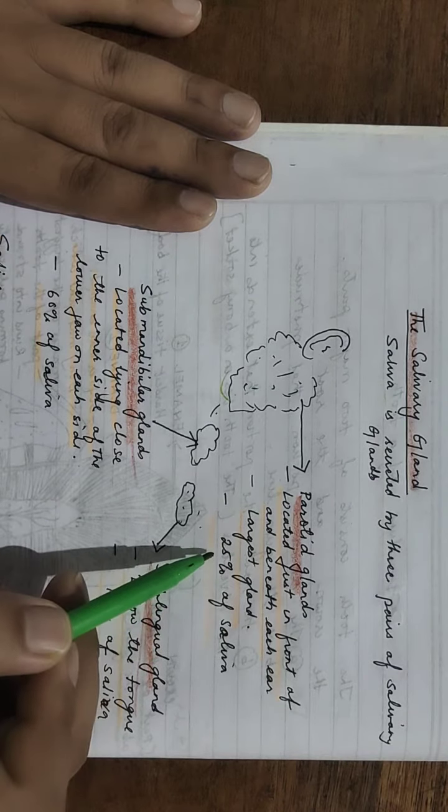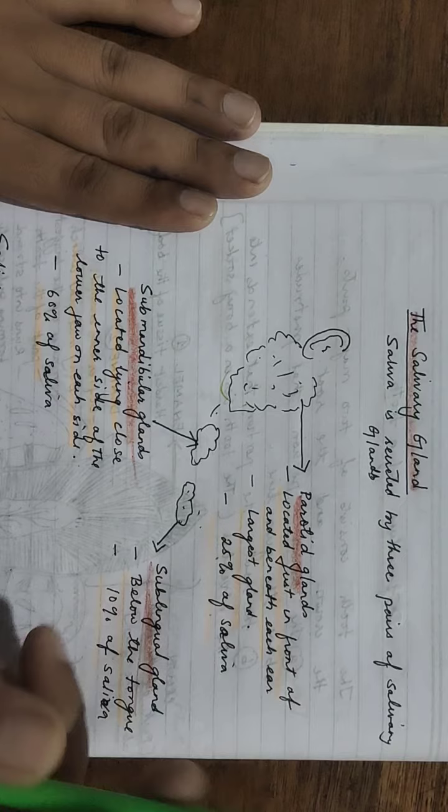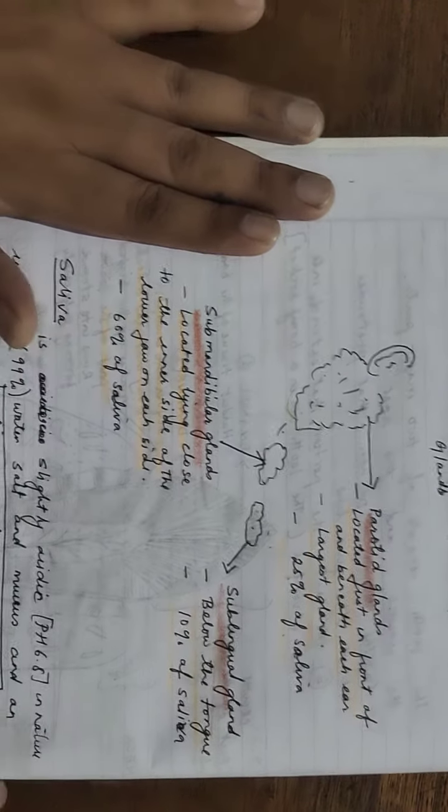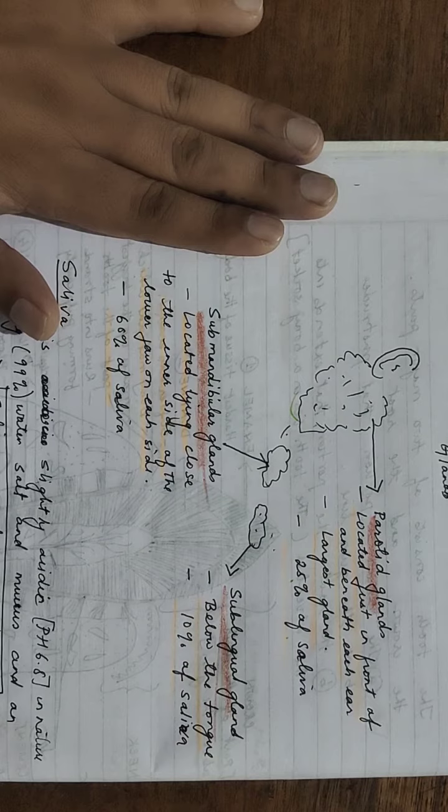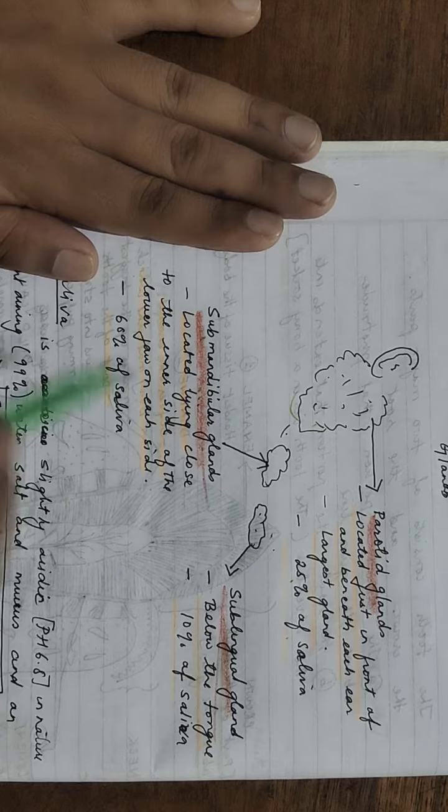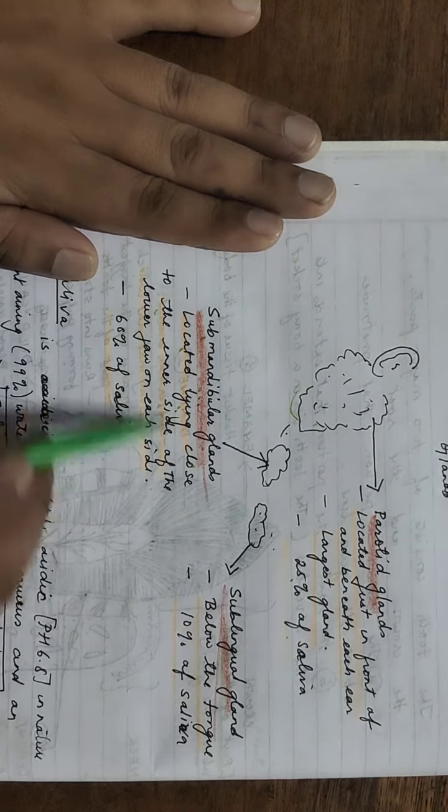This secretes 25% of saliva. Next is submandibular glands, lying close to the inner side of the lower jaw on each side, both sides on the jaw.